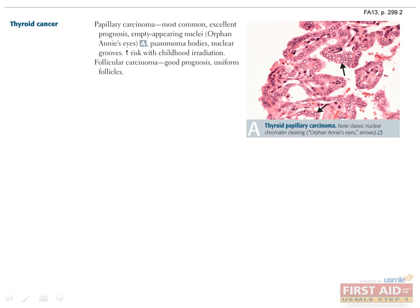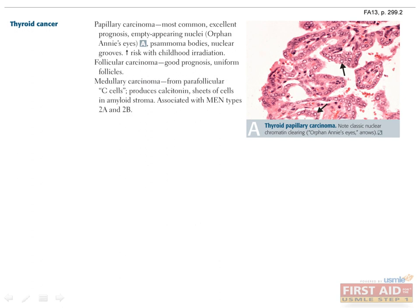Follicular carcinoma is the next most common thyroid cancer, and it also has a generally good prognosis. Pathologists frequently have difficulty differentiating follicular carcinoma from simple adenoma, but uniform follicles point in the direction of carcinoma. Medullary carcinoma derives from the parafollicular C cells and produces calcitonin. Histologically, one sees sheets of cells within an amyloid stroma. It is inherited in about 25% of cases, often associated with MEN2A or MEN2B syndromes, so patients should undergo screening for the other aspects of those syndromes.